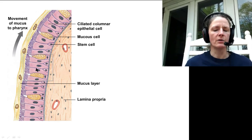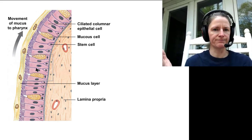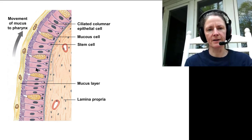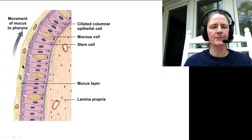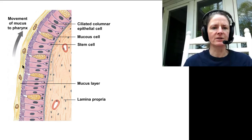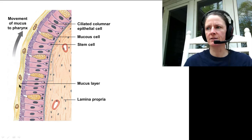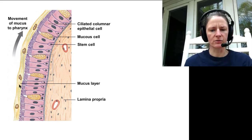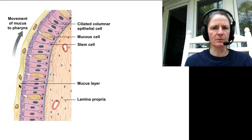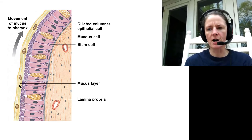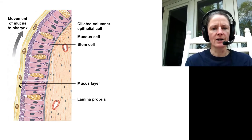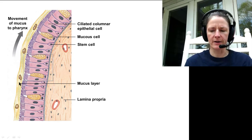Material on the mucus elevator can either be swallowed — where pathogens are destroyed by stomach acid — or coughed out. In individuals with cystic fibrosis, they make far too much mucus that is too thick to move up the elevator. It gets stuck, causing susceptibility to respiratory infections, difficulty breathing, and mucus plugs clogging conducting pathways. People with cystic fibrosis typically only live to their mid-30s in the U.S.